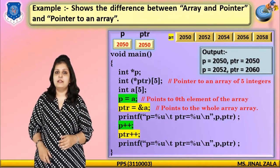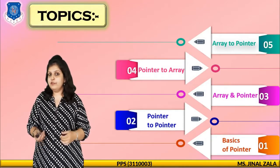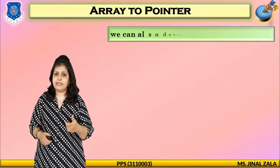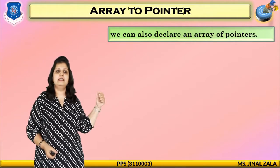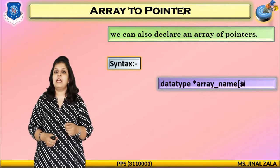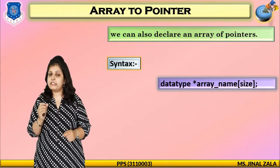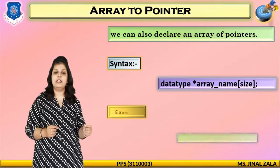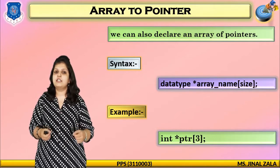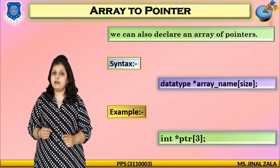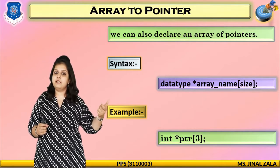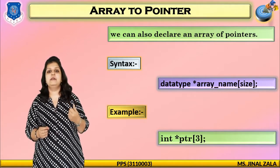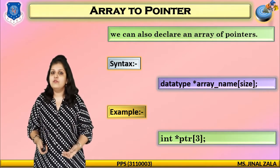Now move to the next topic: array to pointer, which means array of pointers. Here we can declare an array of pointer variables. The syntax is: write the data type, then asterisk, then your array or pointer name, and in square brackets define the size. For example, integer star PTR[3] means in PTR you can store three different addresses: one at PTR[0], one at PTR[1], and one at PTR[2].